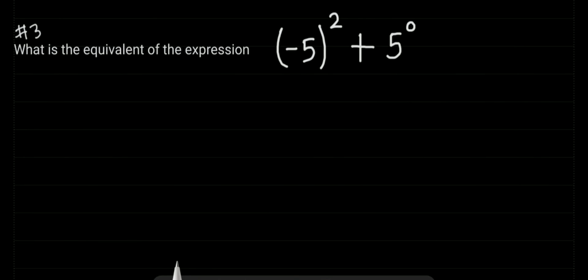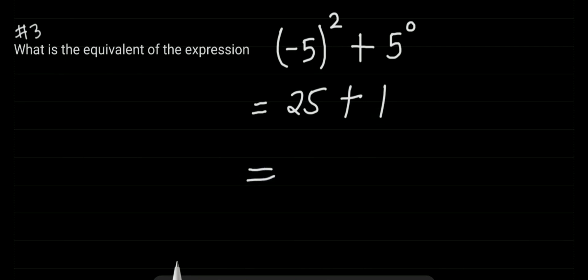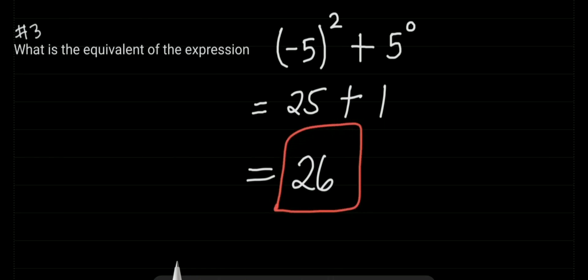For number three: what is the equivalent of the expression parenthesis negative 5 raised to the power of 2, plus 5 raised to the power of 0? Negative 5 times negative 5 is positive 25. Any number raised to the power of 0 is equivalent to 1, so the answer is 26. Thank you very much and I'll see you in my next video.